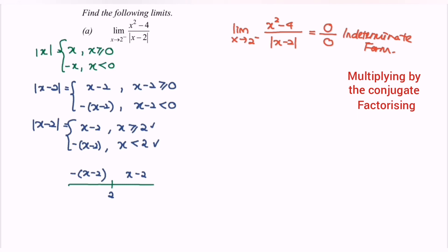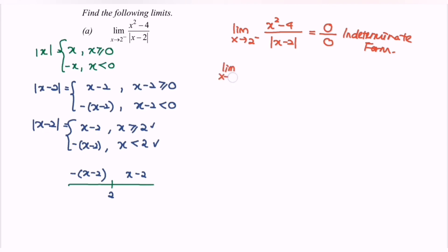My suggestion is to use the definition for the absolute value and factorize x squared minus 4. Taking the limit as x approaches 2 from the left, we factorize the numerator to get (x minus 2)(x plus 2). Since x is approaching from the left, we use the definition: the absolute value of x minus 2 equals negative bracket x minus 2.